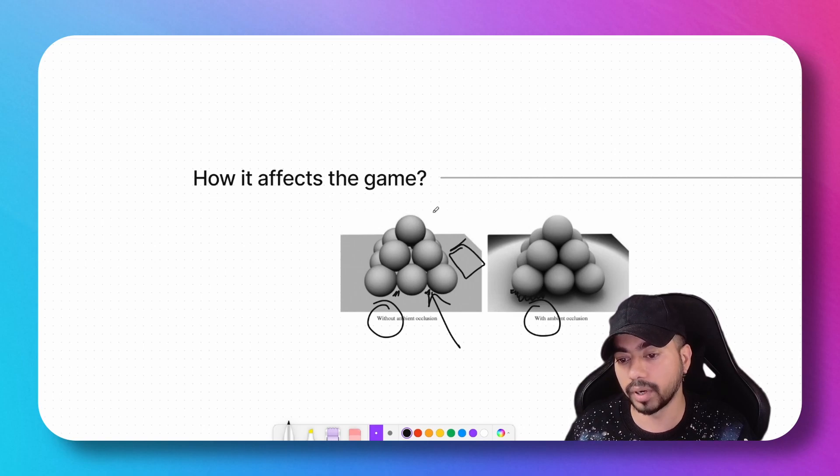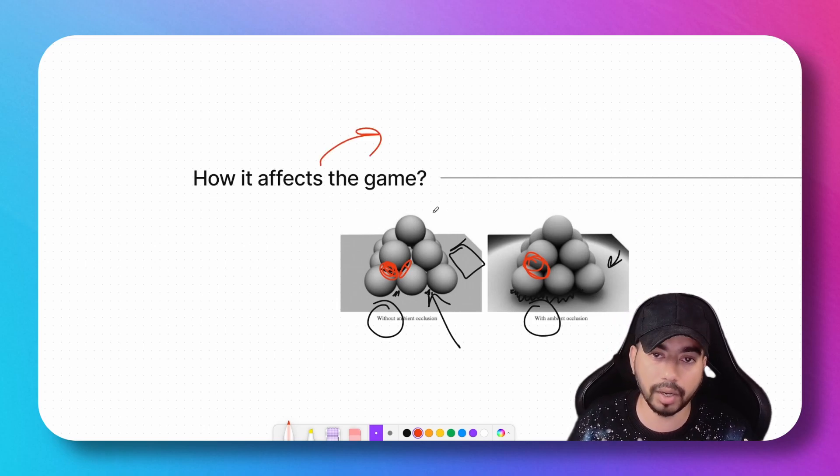But in this particular scene, the color of these areas is darker than the rest of the scene. If you observe around these areas as well, you'll see that the area with ambient occlusion is darker than the area without ambient occlusion. So how it affects the game: it makes your game look more realistic.